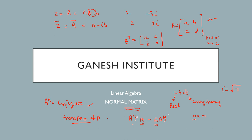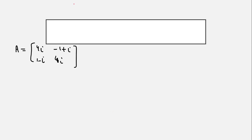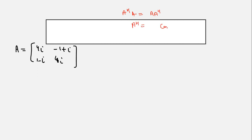Let's find out what this means in practice. If a matrix A is given to you and you are asked to prove, show, or verify whether it is a normal matrix, you have to check whether this condition — A^H A = A A^H — is fulfilled. A raised to the power H is the conjugate transpose of A.